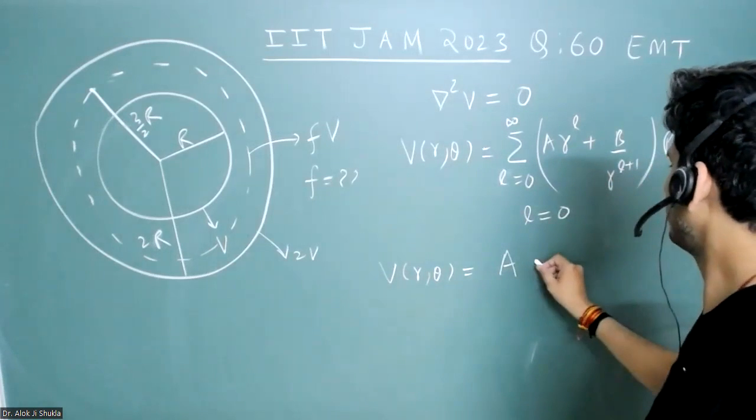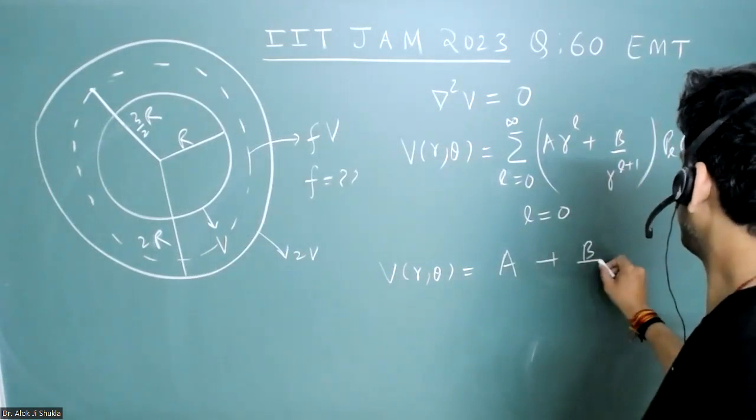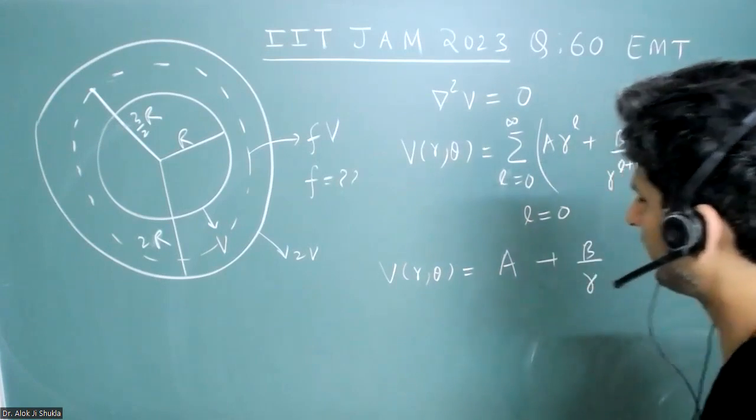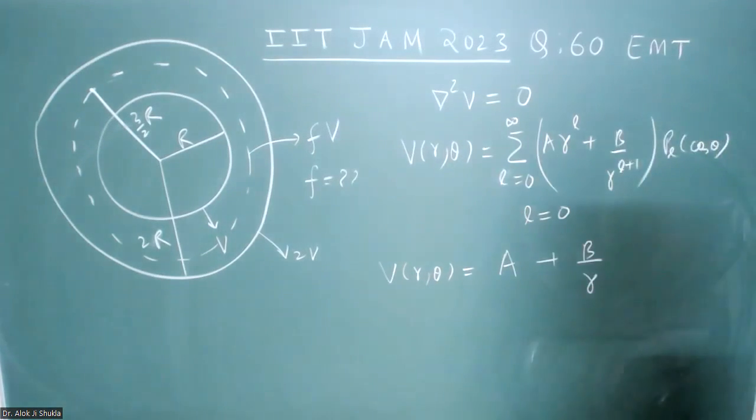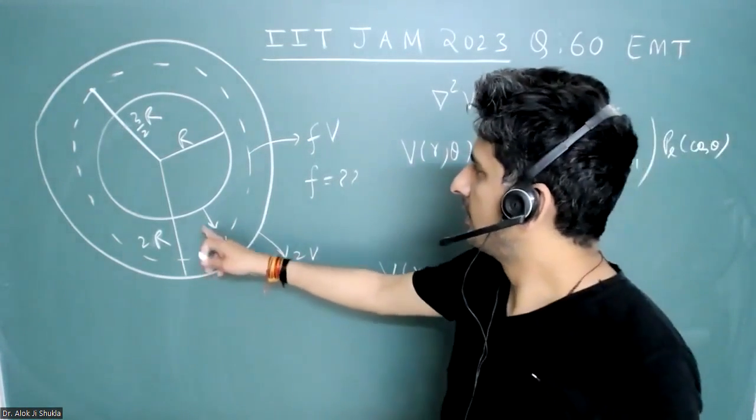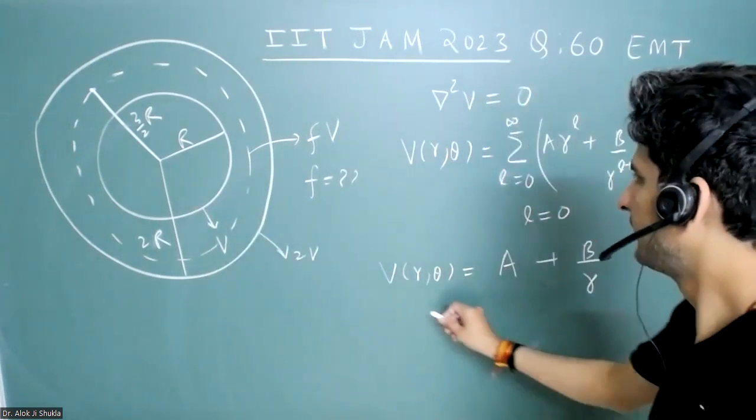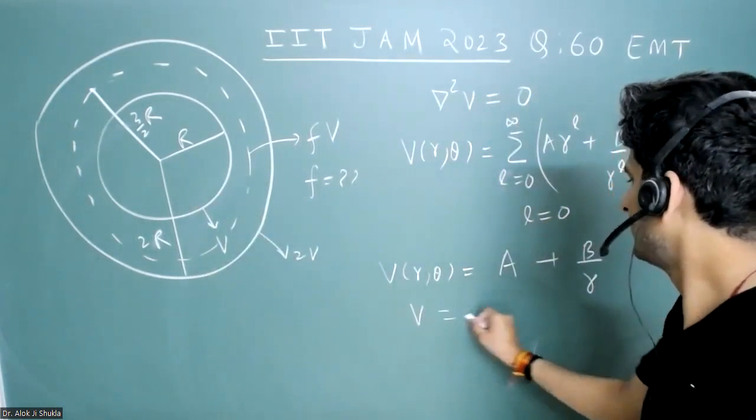A times r to the power zero plus b by r to the power one. This is the profile of the potential. So when the radius is r, the potential is v equals a plus b by r.